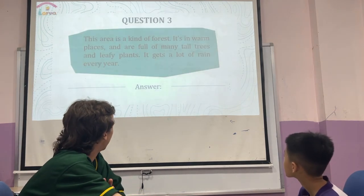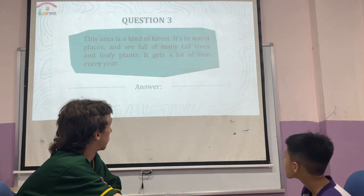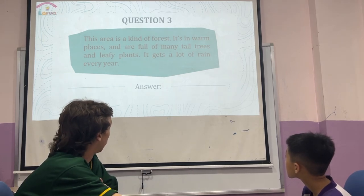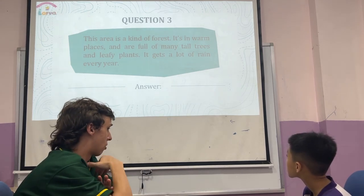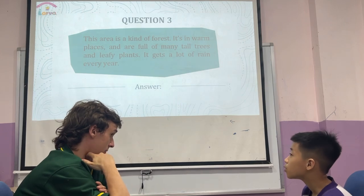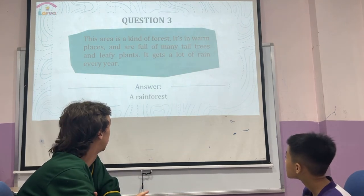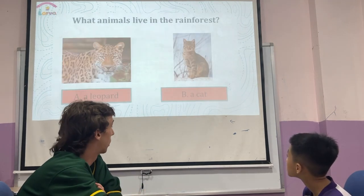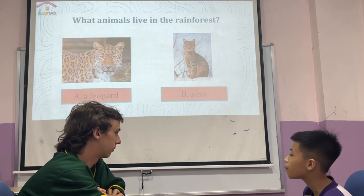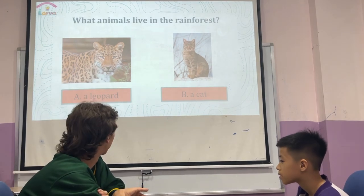Question number three. This area is a kind of forest. It's in warm places, it's full of tall trees. It gets a lot of rain. Rainforest. Rainforest. And what animal lives in the rainforest? A leopard. A leopard, for sure.